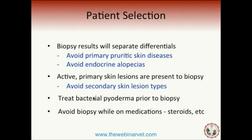Patient selection is key. Some patients should just be avoided — primarily pruritic diseases, or when dealing with endocrine alopecia, where most cases look similarly on surgical biopsy and require specific endocrine testing to sort them out. We're searching for a patient with active primary lesions present. If primary lesions aren't there, the patient may need to come back and we'll do a lesion watch — searching for new lesions to develop that may be more valuable to biopsy.